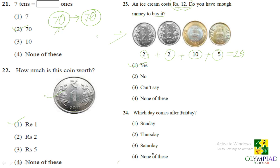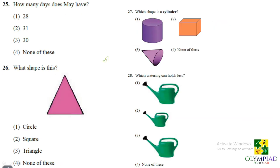So which day comes after Friday? So this is a very easy kind of question. After Friday, you have got Saturday. So answer is Saturday option 3. How many days May have? May means the month of May. So it has got 31 days.